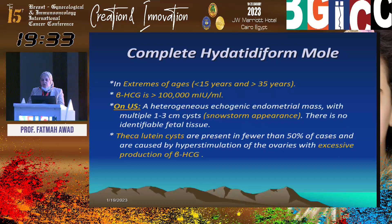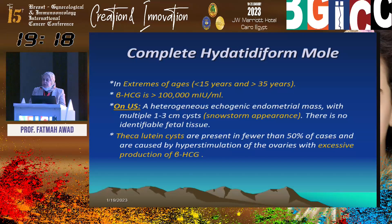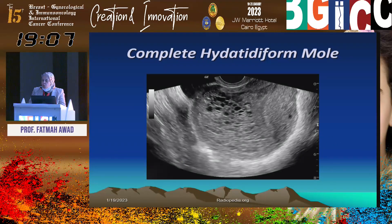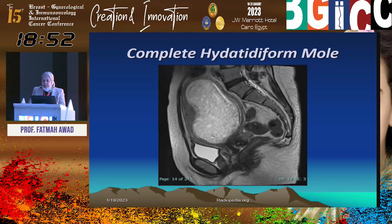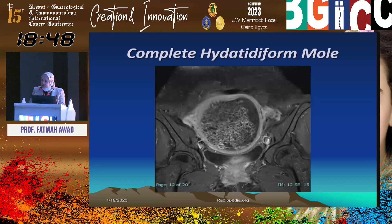The commonest benign gestational trophoblastic disease, in 90% of cases, is the complete hydatidiform mole. It happens at the extremes of ages — females less than 15 years or more than 35 years. Beta-HCG level is characteristically more than 100,000 milli-international units per milliliter. On ultrasound, we see the classical snowstorm appearance — an echogenic cystic mass occupying the uterine cavity. On MRI, we still see this snowstorm appearance as an endometrial cystic mass on T2-weighted images. The cysts appear dark on T1 and bright on T2, but if they contain hemorrhage, they will be bright on both sequences.